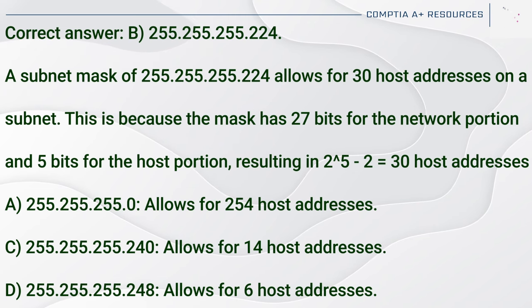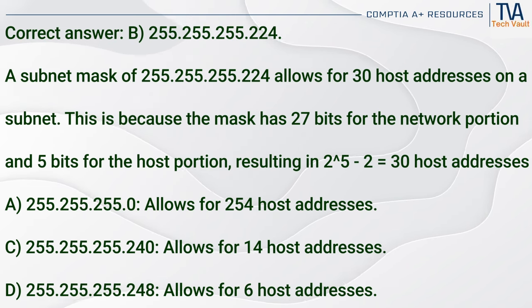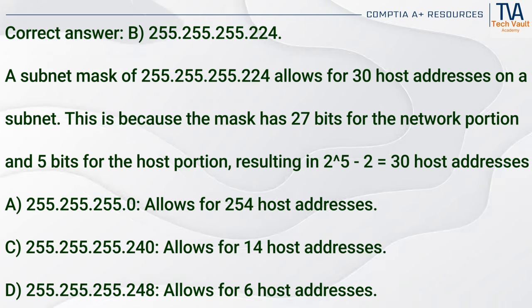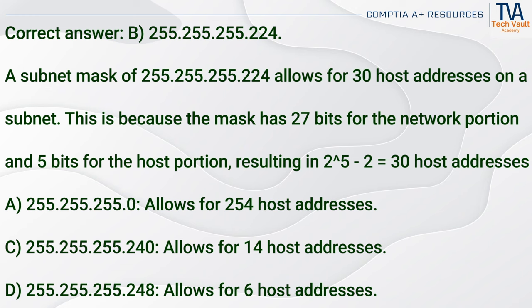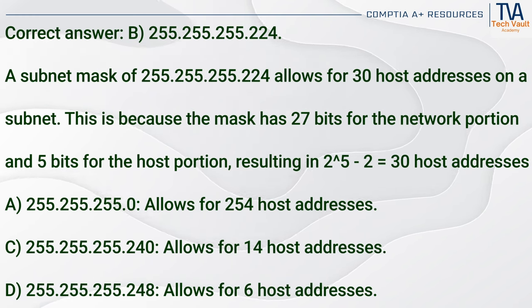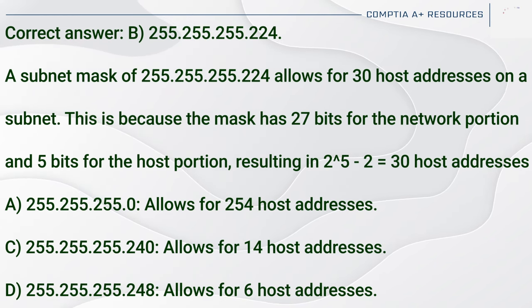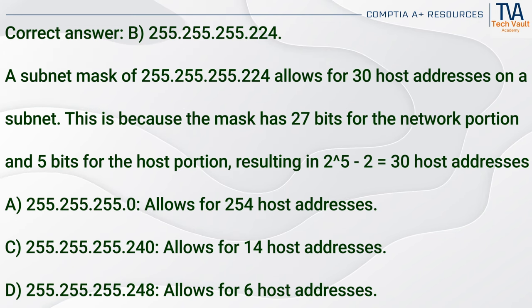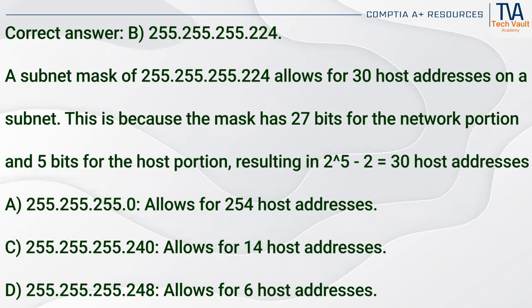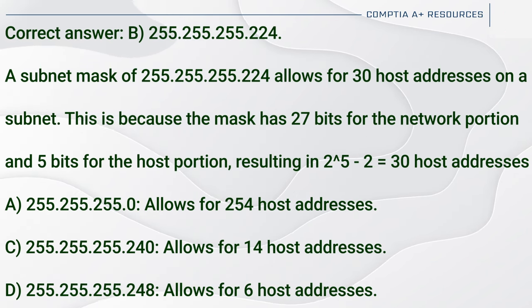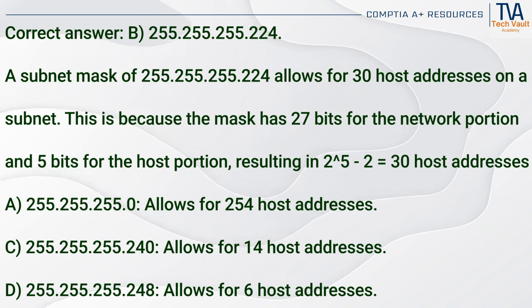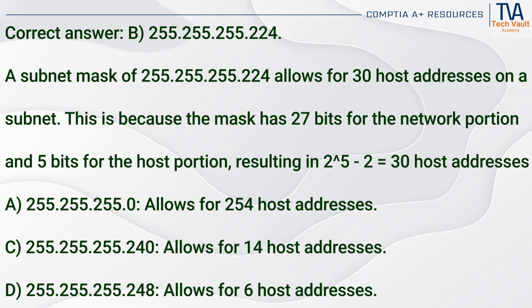Correct answer: B. 255.255.255.224. A subnet mask of 255.255.255.224 allows for 30 host addresses on a subnet. This is because the mask has 27 bits for the network portion and 5 bits for the host portion, resulting in 2^5 - 2 = 30 host addresses. 255.255.255.0 (A) allows for 254 host addresses. 255.255.255.240 (C) allows for 14 host addresses. 255.255.255.248 (D) allows for 6 host addresses.